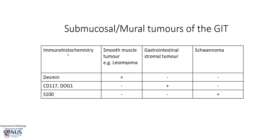A very decisive way to solve this differential diagnosis is by using immunohistochemistry. We apply these antibodies to the tumours on tissue sections. Leiomyomas are positive for Desmin, negative for CD117 or DOG1 — DOG1 stands for 'discovered on GIST1' — and negative for S100. In contrast, gastrointestinal stromal tumours are positive for CD117 and DOG1 and negative for the others, and schwannomas are positive for S100 and negative for the others.